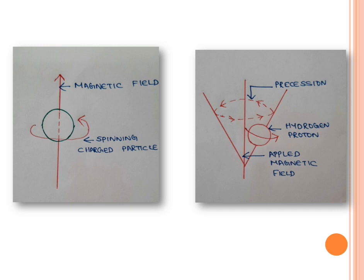This phenomenon is known as precession. Precession means when a hydrogen proton is subjected to an external magnetic field, it spins on its axis and at the same time also rotates around the applied magnetic field, and this process is known as precession.